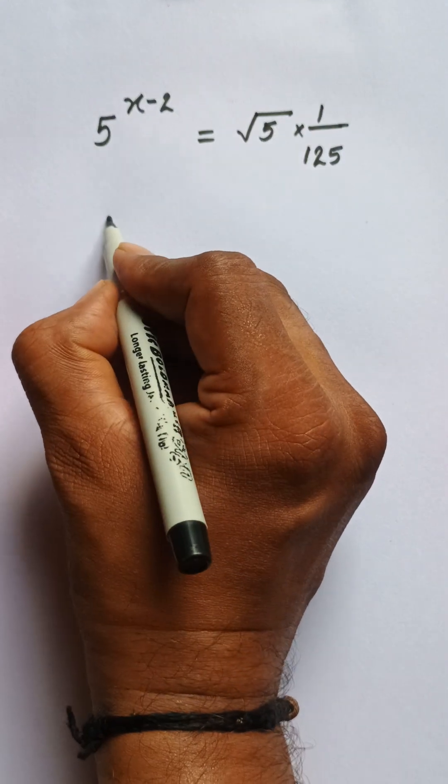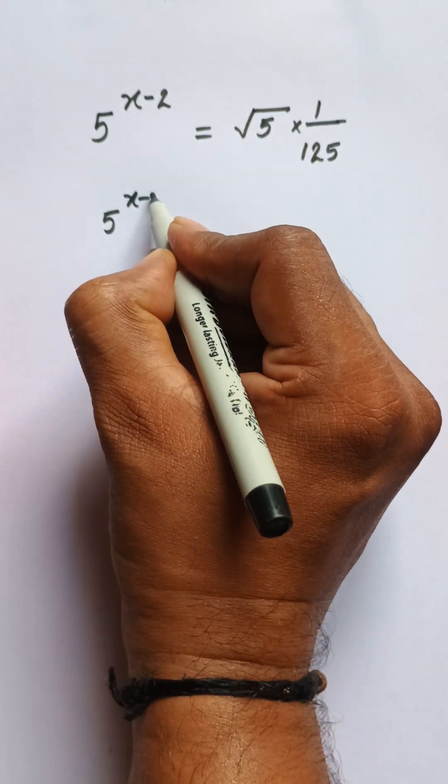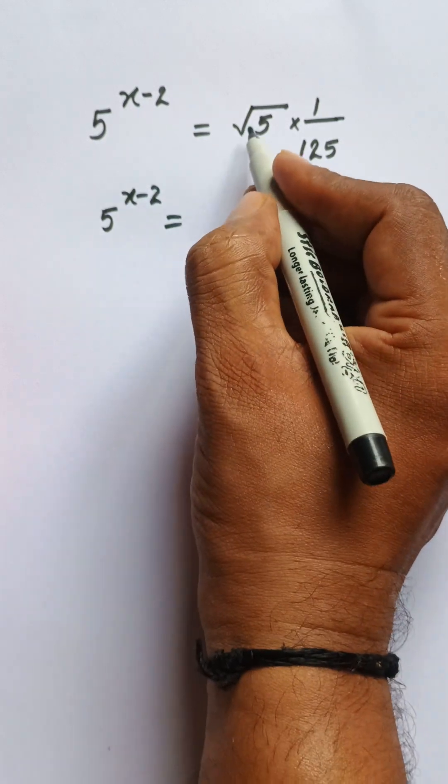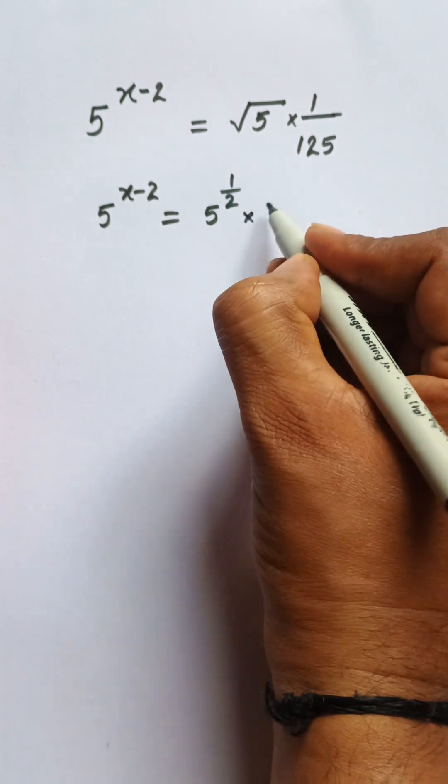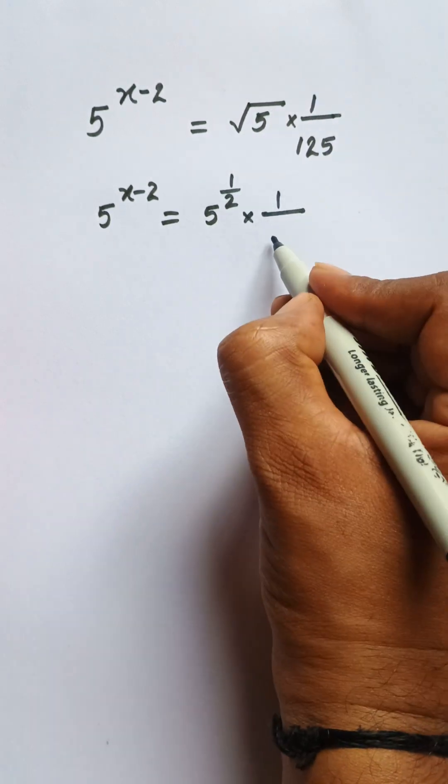Hello everyone, let's solve this problem: 5 to the power x minus 2. Here we have root 5, which can be written as 5 to the power 1/2, and 1 divided by 125 can be...